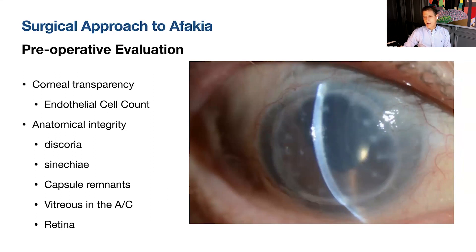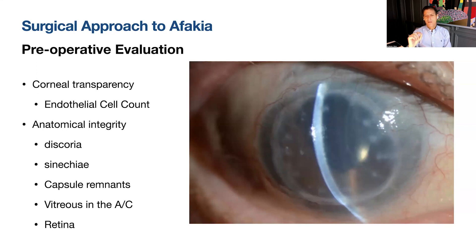We need to make sure the endothelial cell count is good enough for us to proceed, since the procedure is long and requires a lot of intraocular manipulation. Yesterday I saw a patient who had a corneal transplant and cataract surgery but was left with a minus five outcome. I had done a deep anterior lamellar keratoplasty in her right eye with a toric IOL and her vision is quite good.